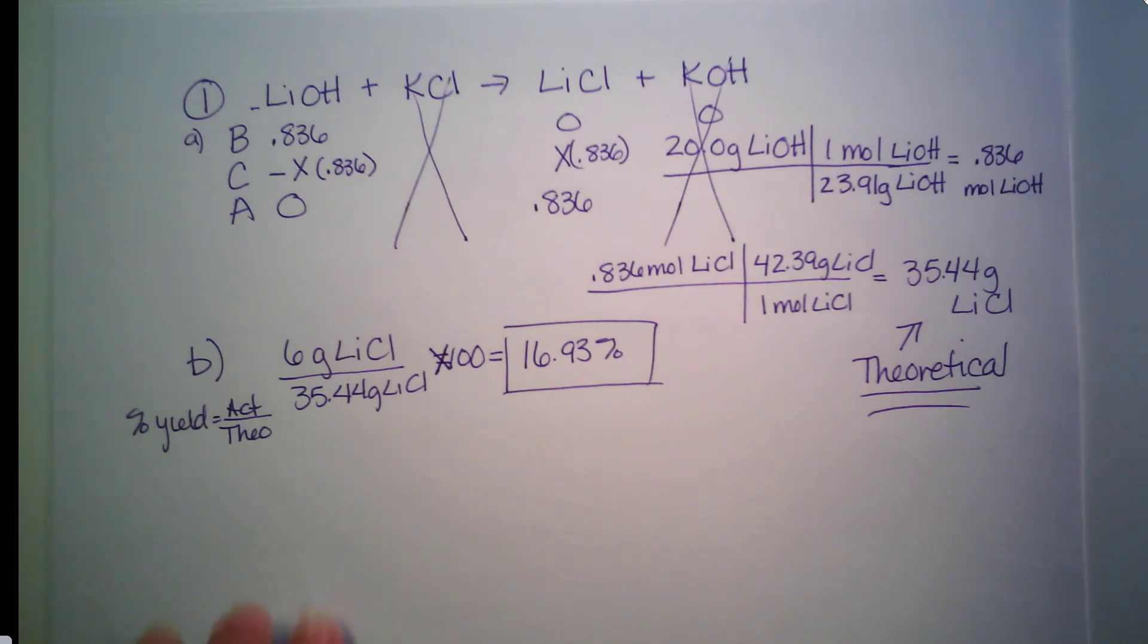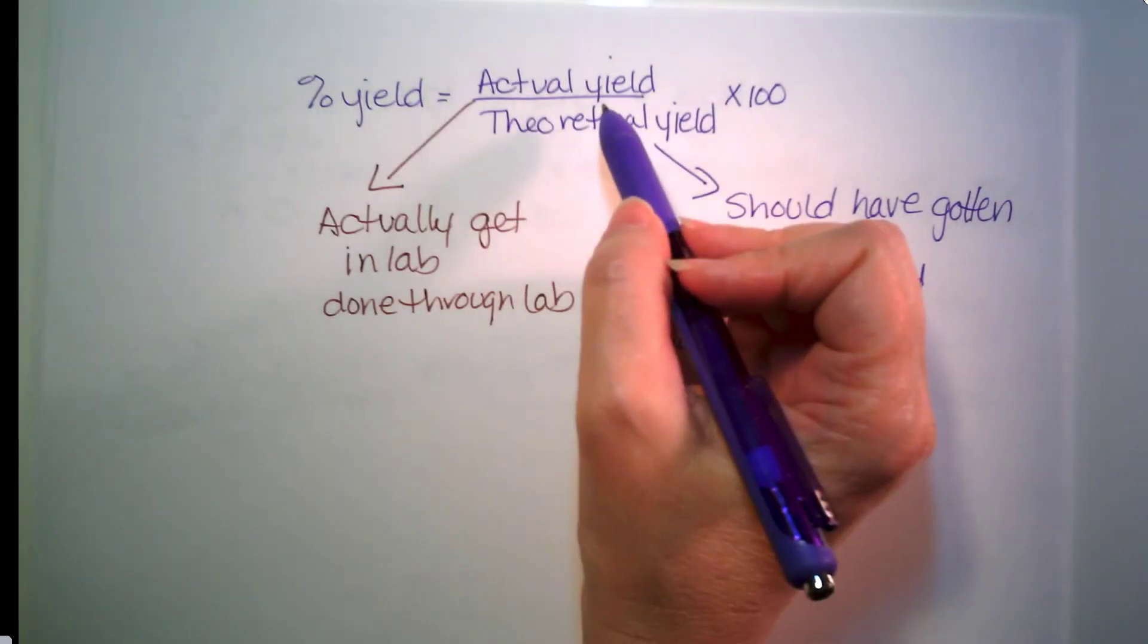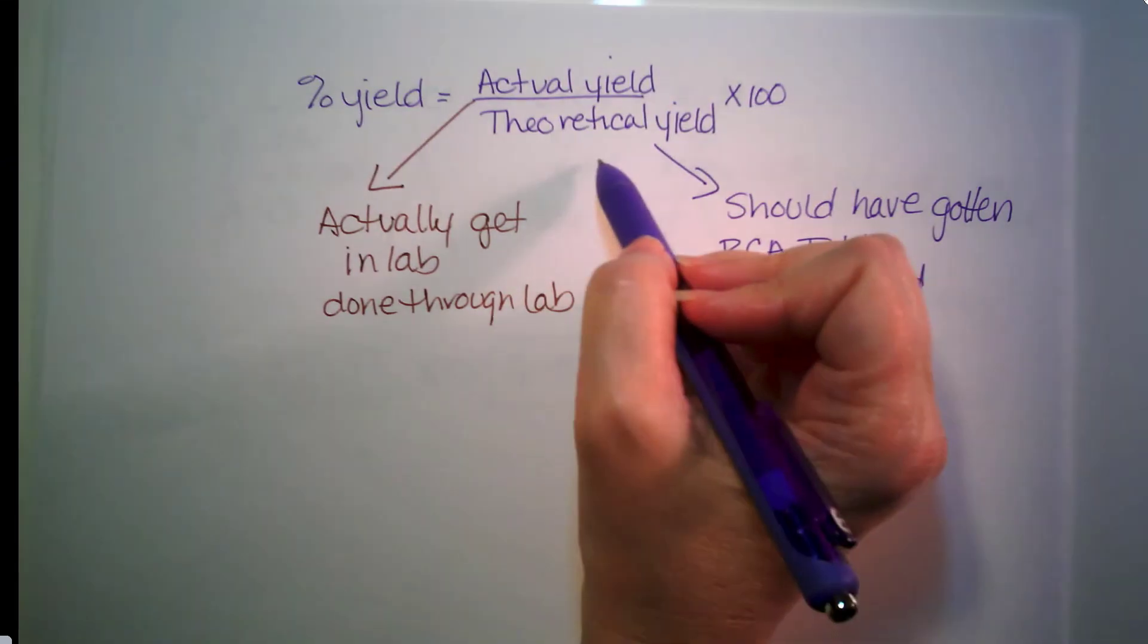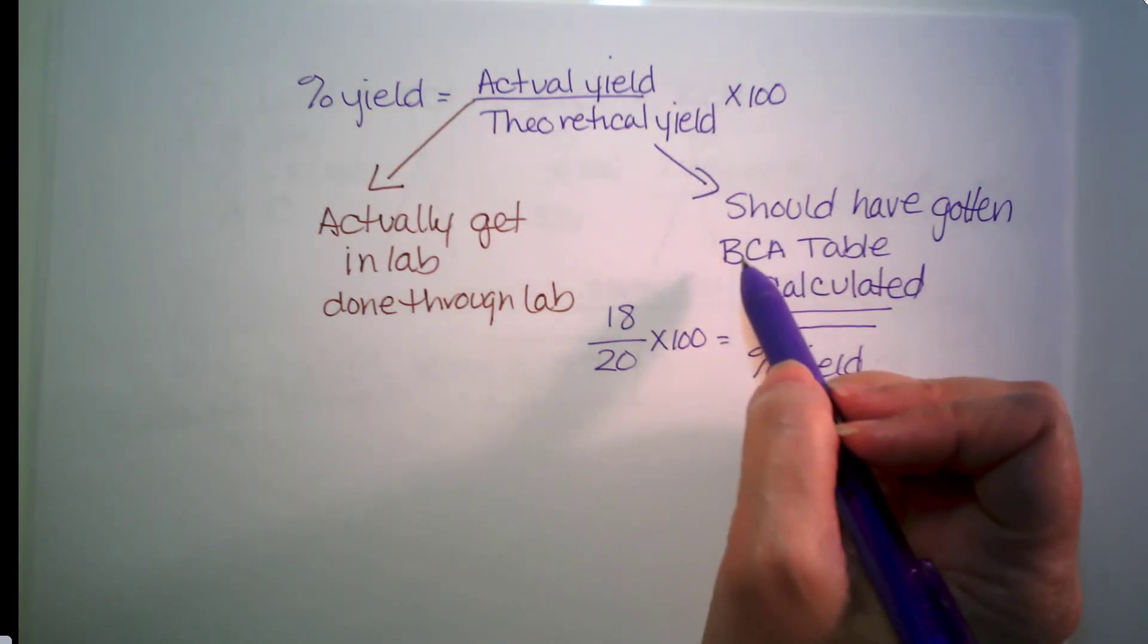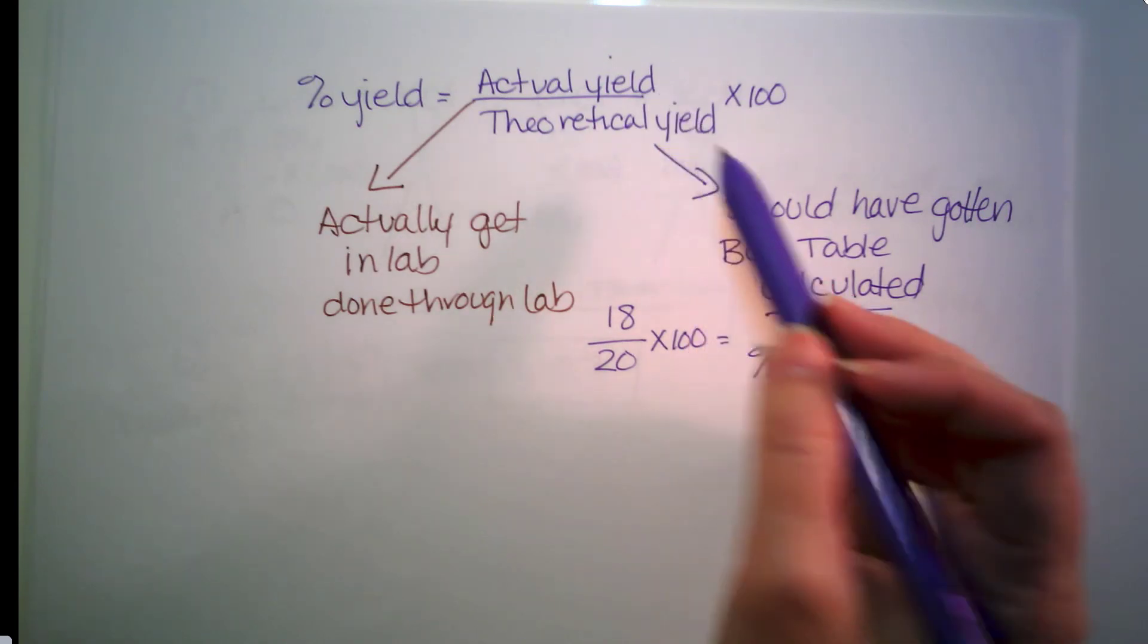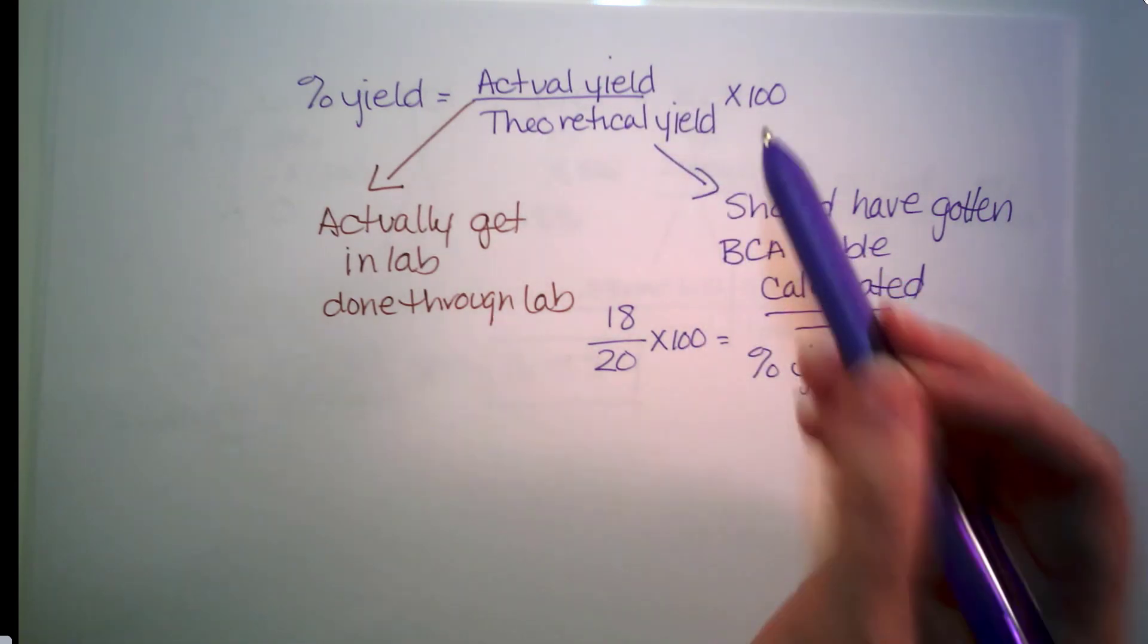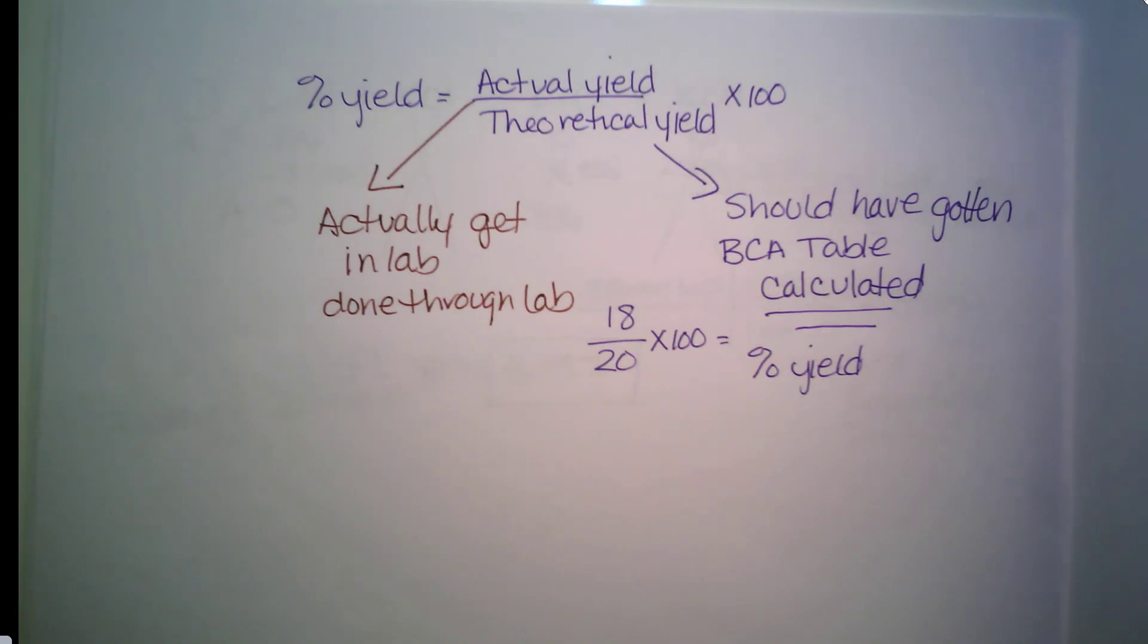So recap. Percent yield is equal to our actual yield, what we actually get in our lab, divided by theoretical yield, which is what we should have gotten. So we take what we actually got, divided by what we should have got, times 100, and that will give us our percentage. So as you go through the remainder of these questions, make sure you pay close attention to exactly what they're telling you and what they're asking you. I'm here if you need me. Thanks guys.